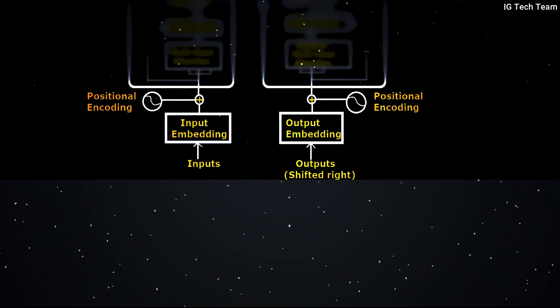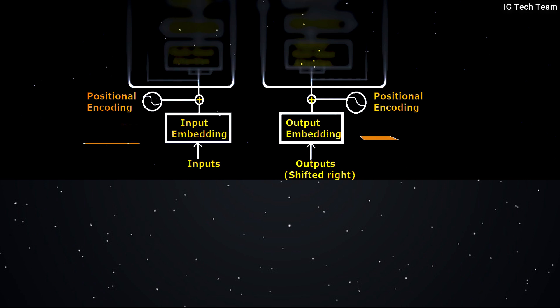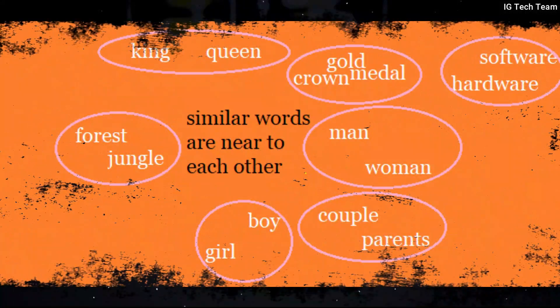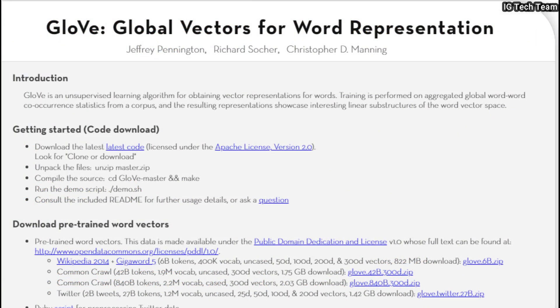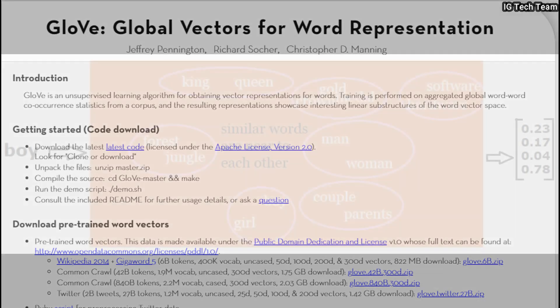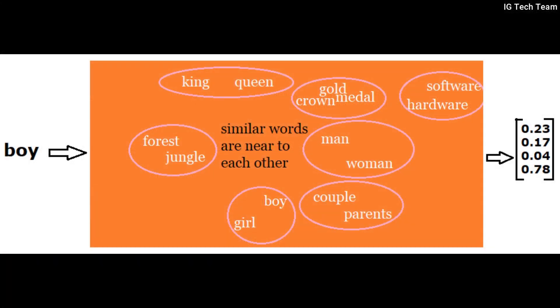We have to convert our strings to some numbers, matrices, or vectors, as computers do not understand our language or words. For this purpose, word embedding techniques can be used. Similar words are close to each other in this embedding space. To convert words to vectors, mostly GloVe is used, which is a pretrained word representation technique. Using this technique, each word gets converted into its corresponding vector.